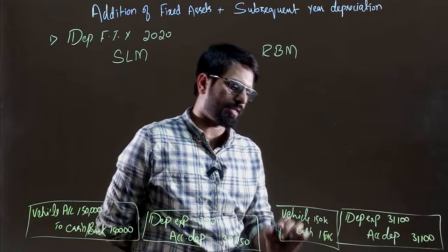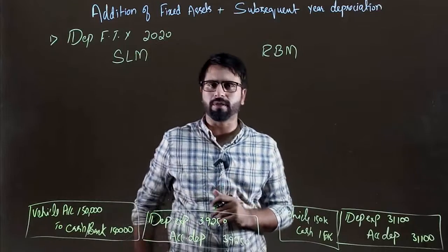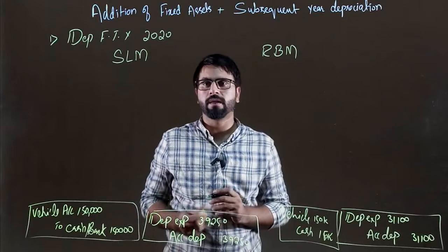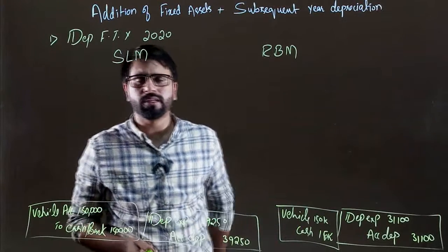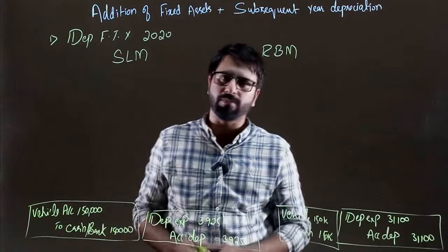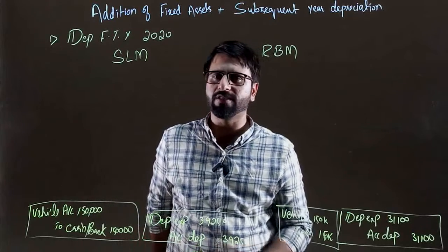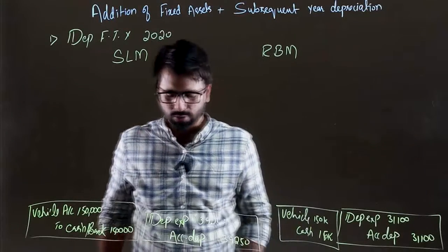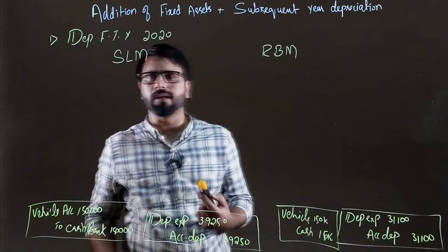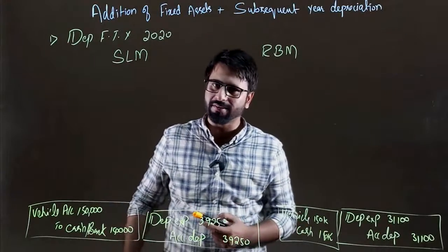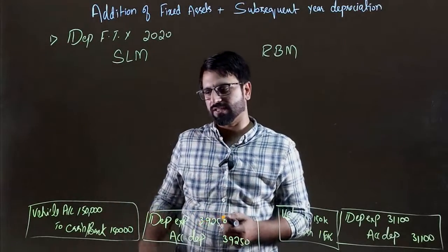These are the two journal entries. This is our second requirement complete. The third requirement says that you will make relevant ledgers. Now, who are relevant ledgers? The accounting is relevant.